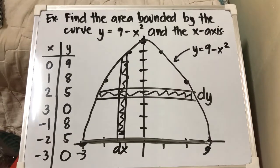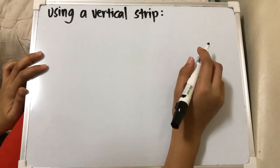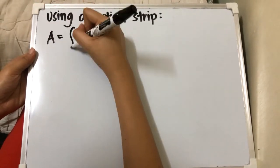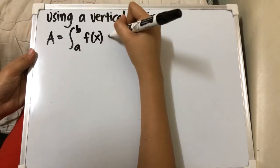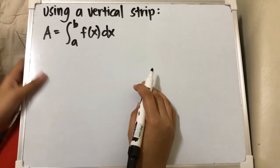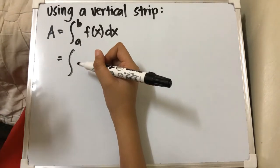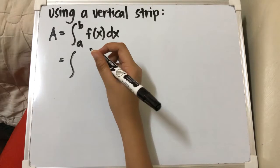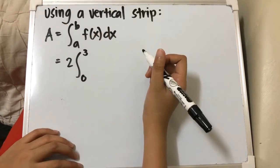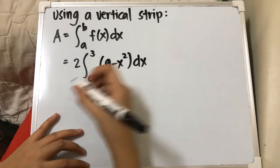Solving by the vertical strip: the area formula is the integral from a to b of f(x) dx. Since the curve is symmetric, we solve one quadrant and multiply by 2. So we have 2 times the integral from 0 to 3 of (9 minus x²) dx. Splitting: 2 times the integral of 9 dx from 0 to 3, minus 2 times the integral of x² dx from 0 to 3.